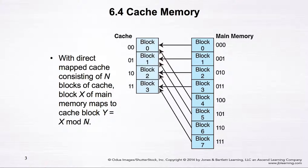Now, for block 4: 4 mod 4 equals 0 — the remainder is 0 — so block 4 maps to block 0 in cache. If x equals 5, then 5 mod 4 gives a remainder of 1, so y equals 1, meaning block 5 in memory maps to block 1 in cache. Similarly, 6 mod 4 equals 2, so it maps to block 2 in cache, and 7 mod 4 equals 3, so it maps to block 3 in cache. This is the direct map cache where n is 4 blocks.